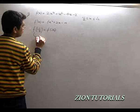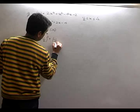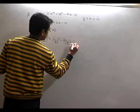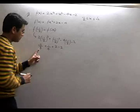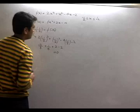What is this value? 2(-1/2)³ + (-1/2)² - 4(-1/2) - 2. That is equal to -2/8 + 1/4. And this becomes equal to 0.